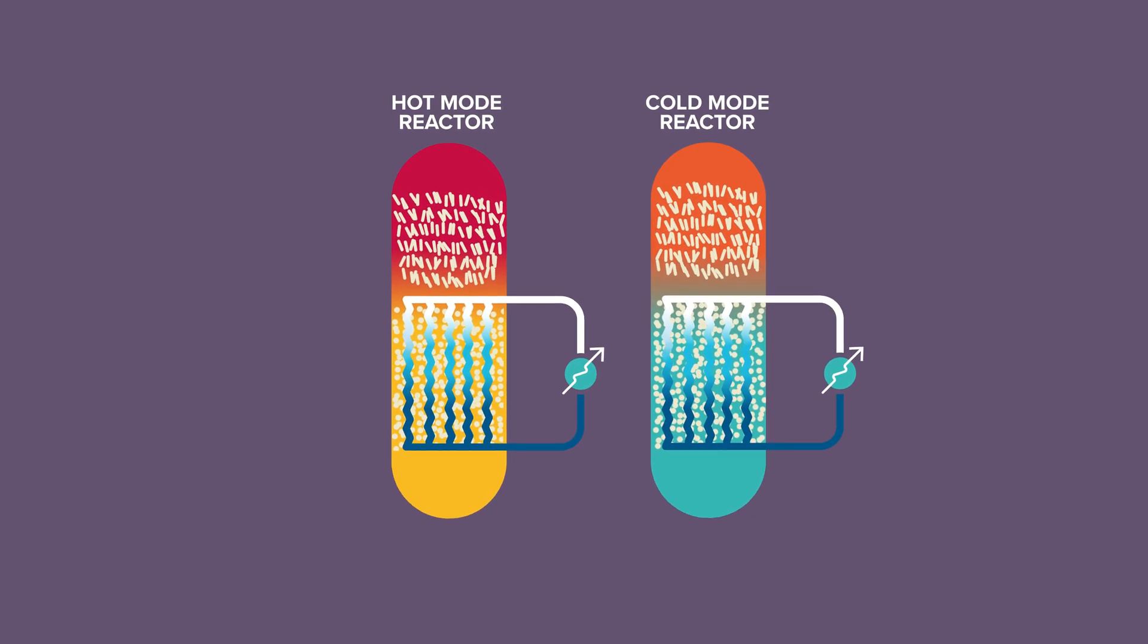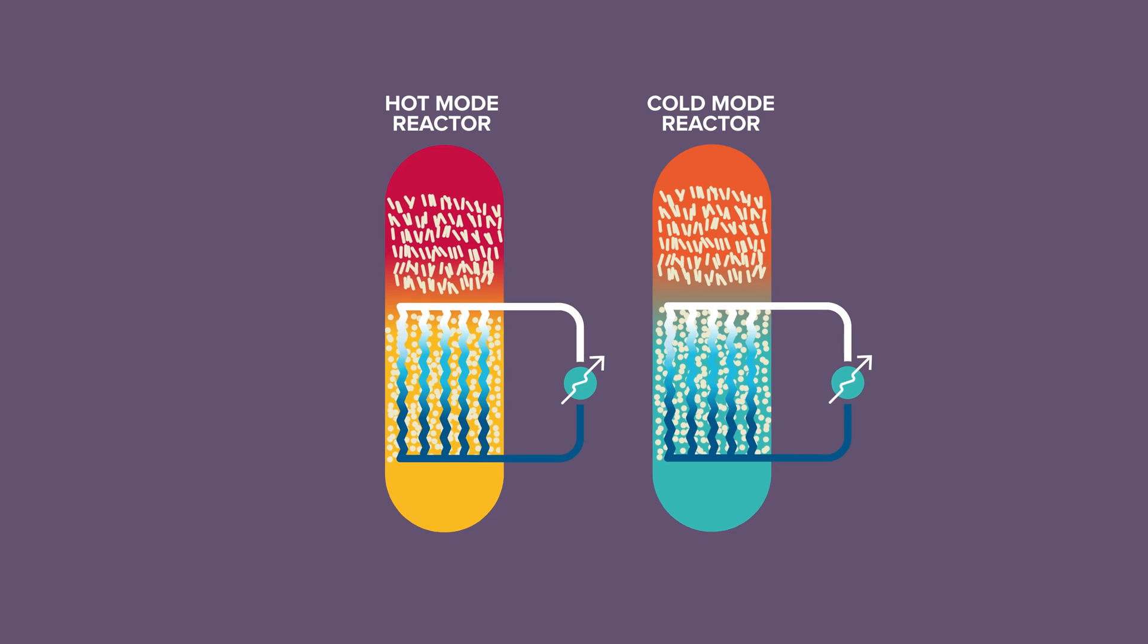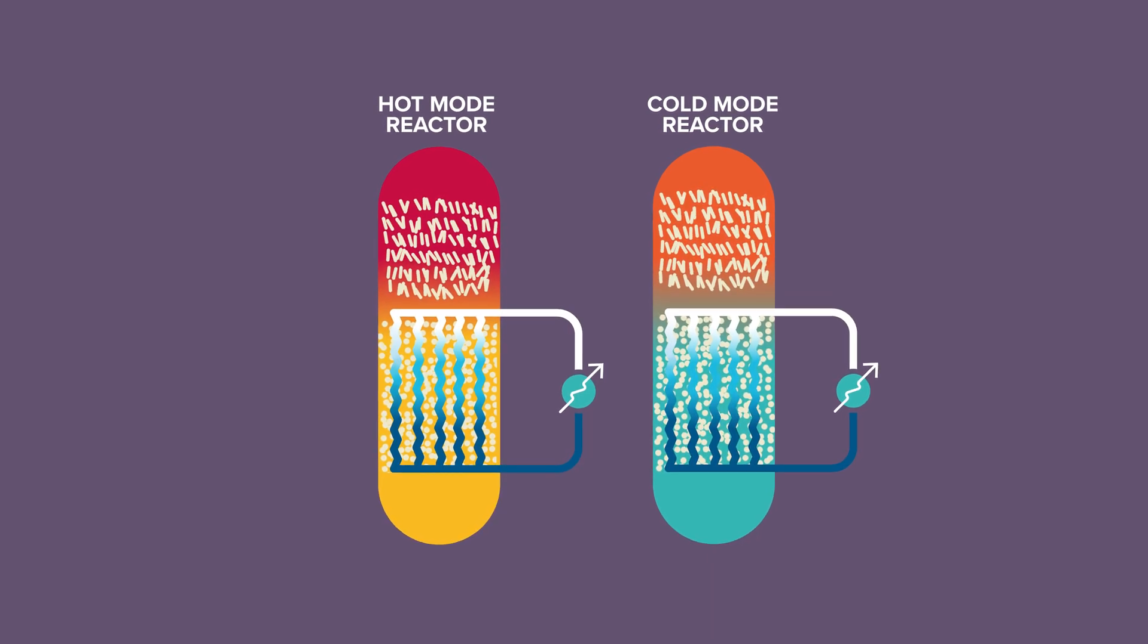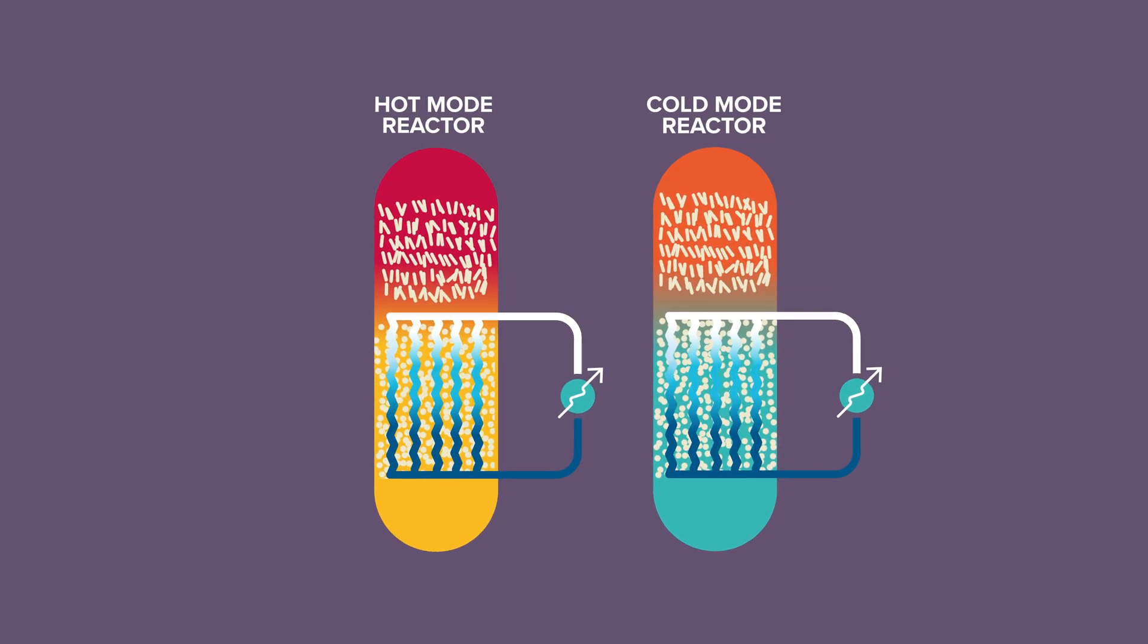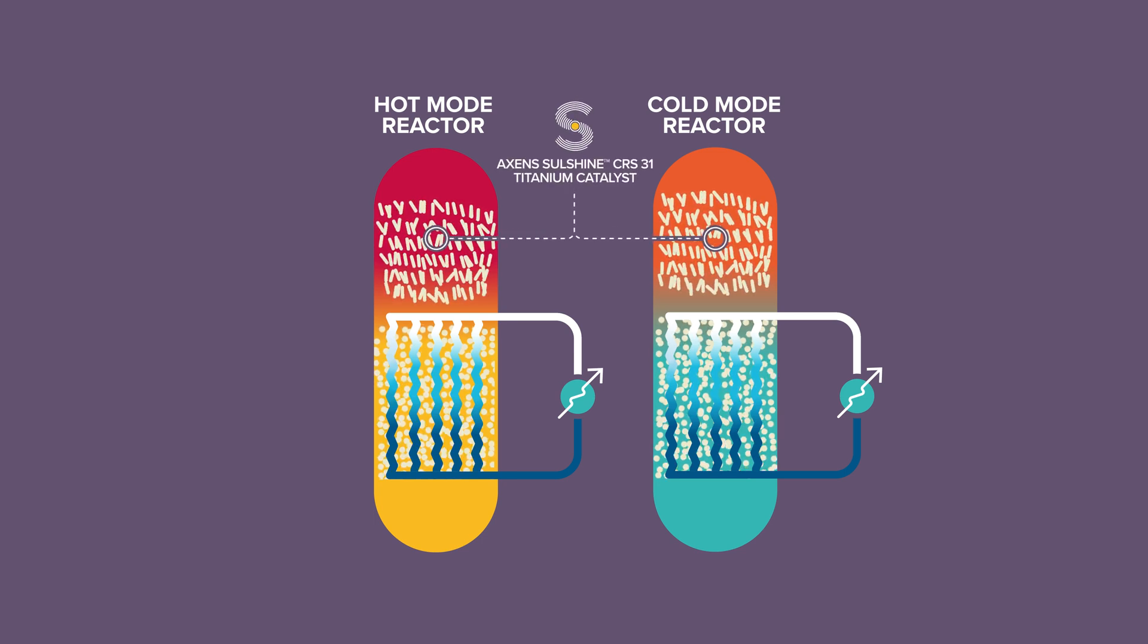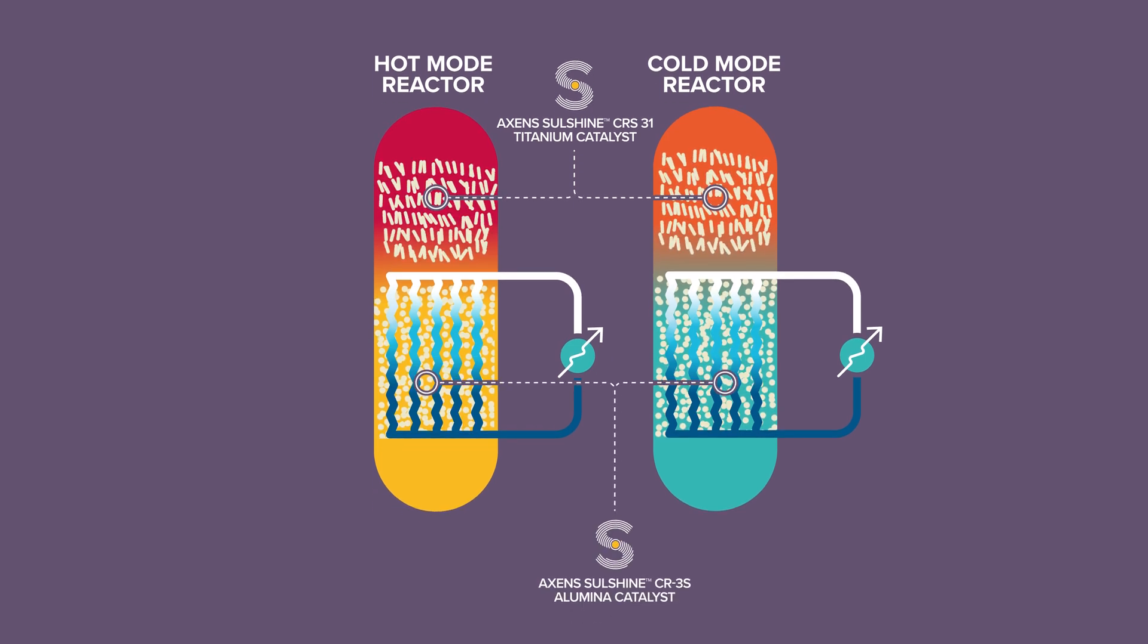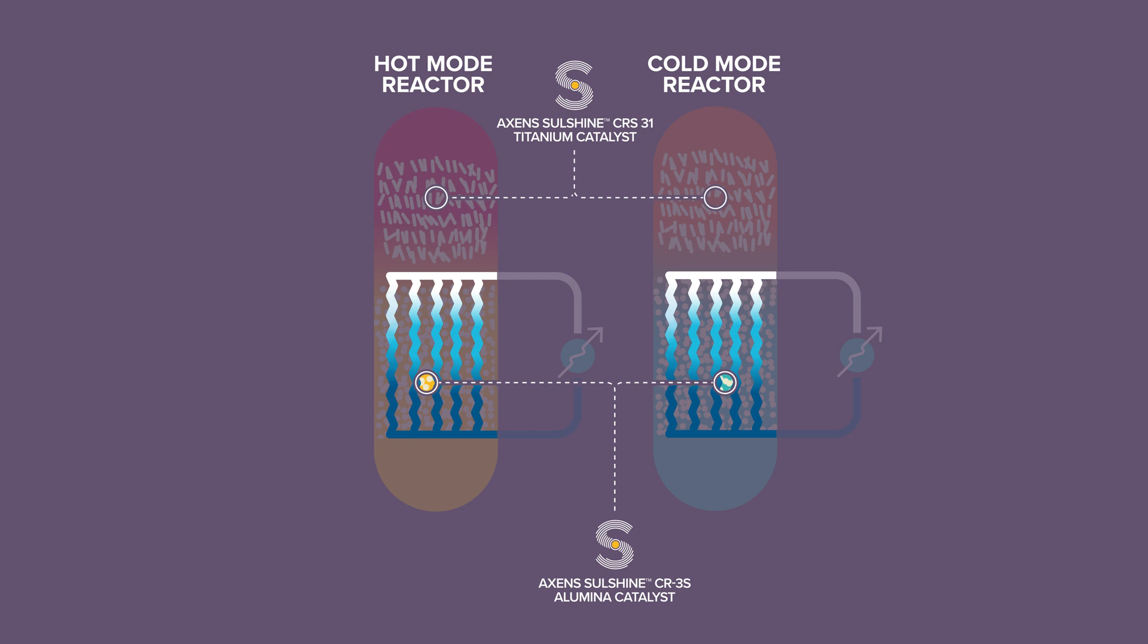The first reactor operates at hot temperature, hot mode, whereas the second one operates at low temperature, cold mode. Both reactors are filled with AXEN's titanium catalysts in the top adiabatic section, whereas AXEN's alumina catalyst is loaded in the bottom isothermal section between the thermoplates of the integrated cooler.